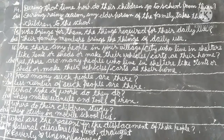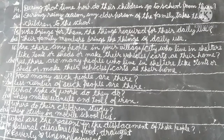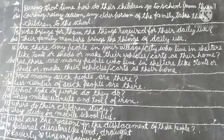Question 18: what type of work do they do? They make utensils and tools of iron. You will see them in all cities. Question 19: where do their children study? They study in mobile schools.